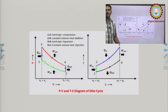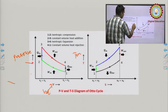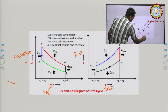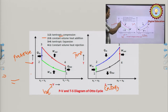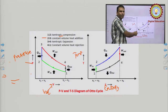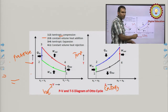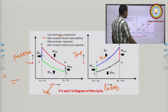The PV and TS diagrams of the Otto cycle show P for pressure, V for volume, T for temperature, and S for entropy. Process 1→2 is isentropic compression; 2→3 is constant-volume heat addition; 3→4 is isentropic expansion; and 4→1 is constant-volume heat rejection. On the TS diagram, entropy is constant during 1→2 and 3→4, while volume is constant during 2→3.